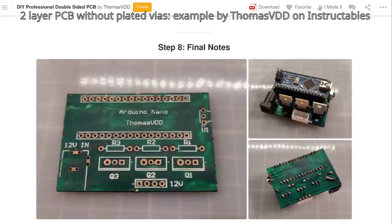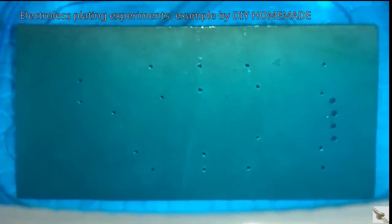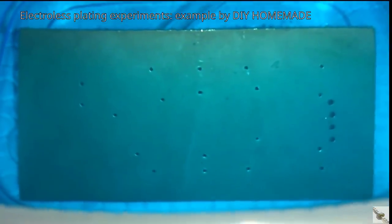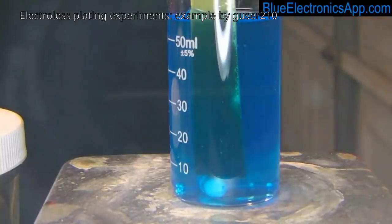Making two-layer PCBs without plated vias has been done by countless experimenters. Rivets are sometimes used to connect the top and bottom traces. Some experimenters tried coating holes in conductive graphite and electroplating copper, and a few succeeded in electroless plating, for example the DIY homemade NG user 210 on YouTube.